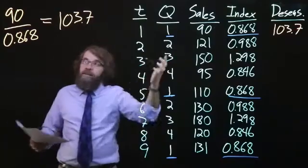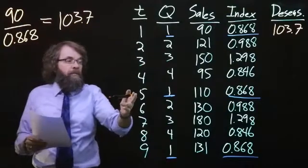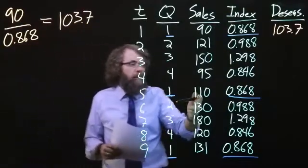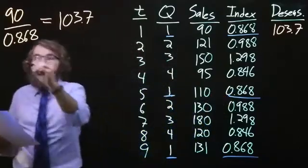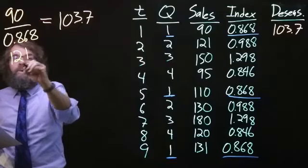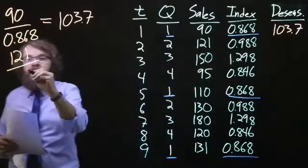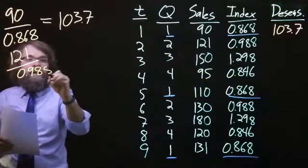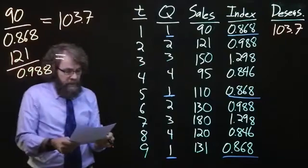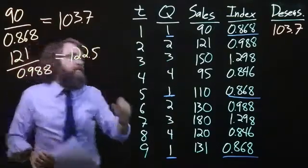That's how we do the first period. When we look at period number five, same thing. We'll take 110 and divide it by 0.868. Let me do the second period just to show you again. So, 121, the actual, and divide it by the index for the second quarter, 0.988. That gives us a de-seasonalized number of 122.5.